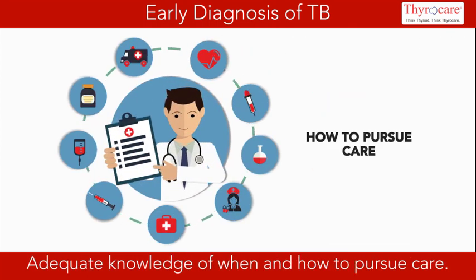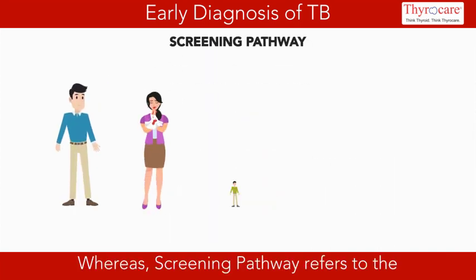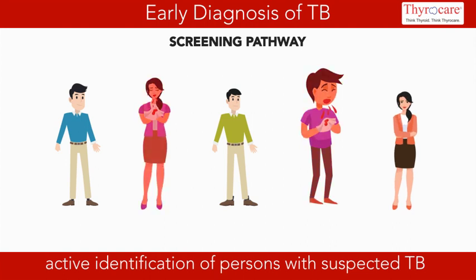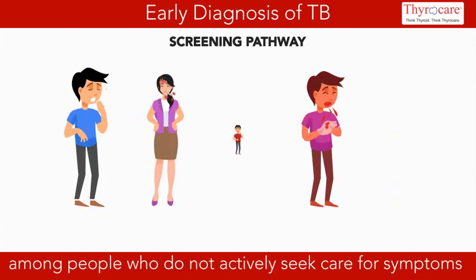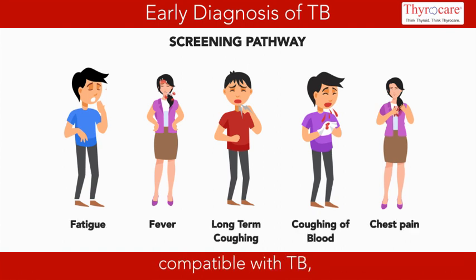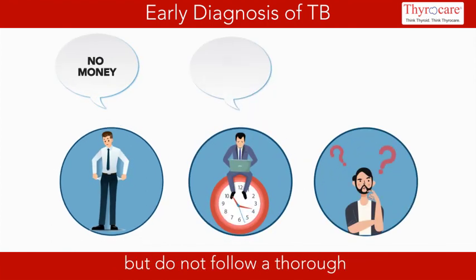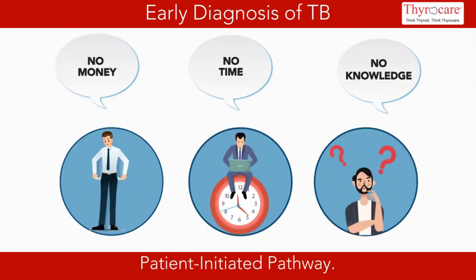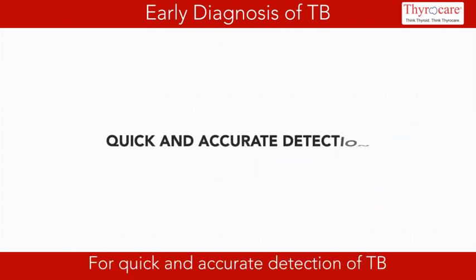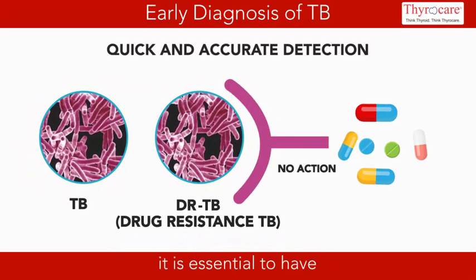The screening pathway refers to the active identification of persons with suspected TB among people who do not actively seek care for symptoms compatible with TB, and among people who just start but do not follow a thorough patient-initiated pathway.